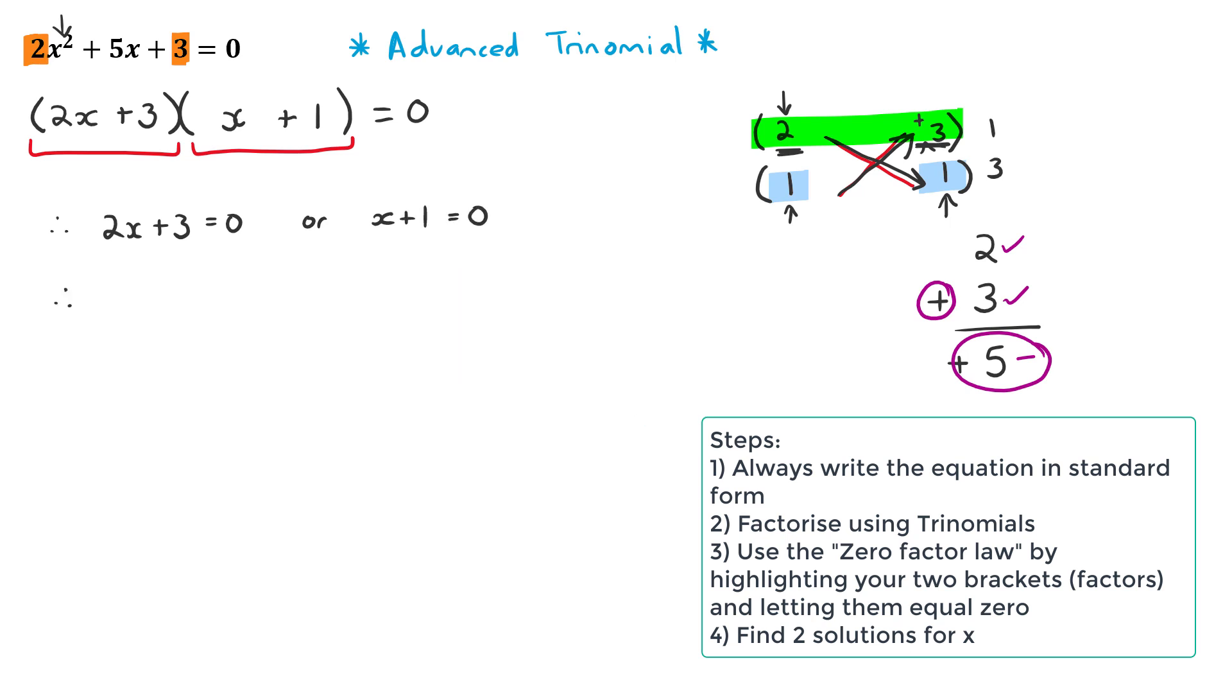Then I'm just going to rearrange. So it's going to be 2x equals minus 3. Therefore, x is equal to minus 3 over 2. And on this side, x becomes minus 1. So there's solution number one, there's solution number two, which is correct because we have a degree of 2.